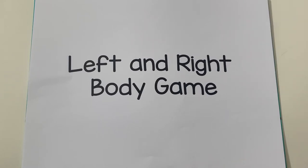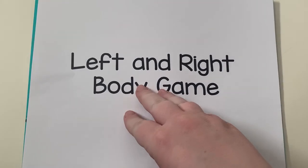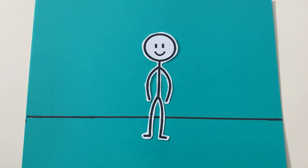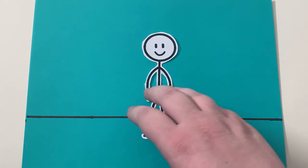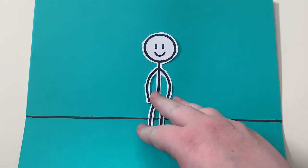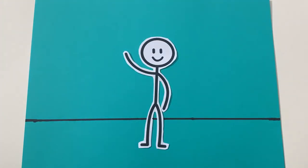As a child begins learning about left and right, you can play a game using parts of their body. You can ask the child something like, can you raise your right hand? And they can raise their right hand.